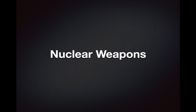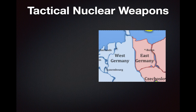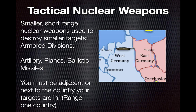Nuclear Weapons. Tactical nuclear weapons are smaller, short-range nuclear weapons used to destroy smaller targets like armored divisions. They can be delivered by artillery, planes, or ballistic missiles. In our simulation, you must be adjacent or next to the country your targets are in — the range is one country away — and you can destroy the armored units of the other country.